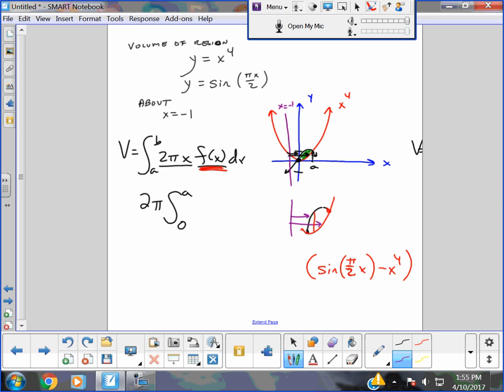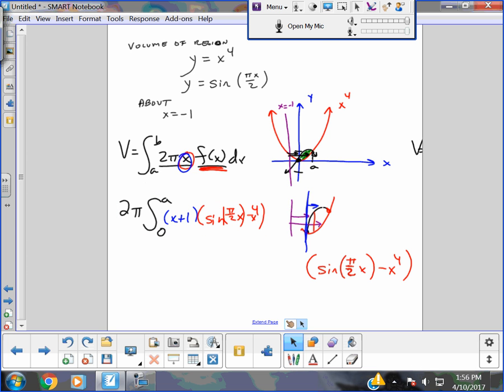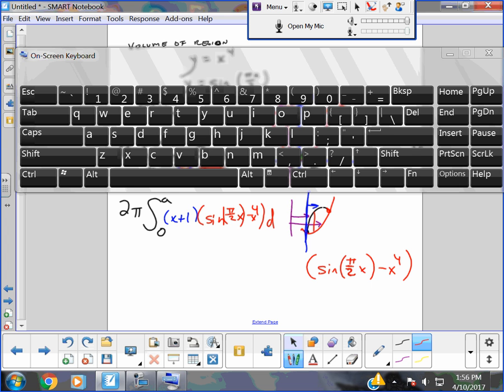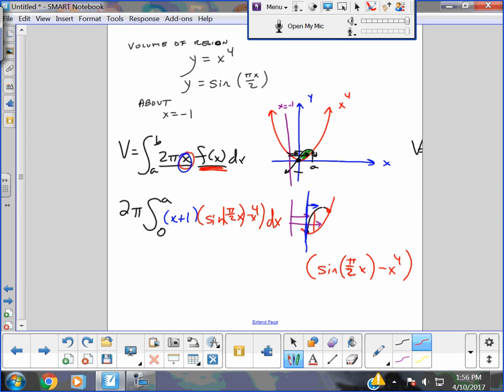Now we've just got to know what's the distance? Well, the distance this time is not x times that, is it? Because x would start right here from the origin. And that's not the purple arrows we've got going on, is it? Through that line. So if it's x minus a minus 1, or it's simply x plus 1. And my f of x is sine pi over 2x minus x to the 4th. All dx. And we have just set up our integral.